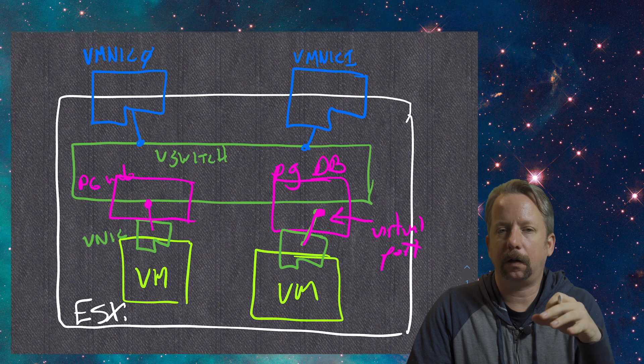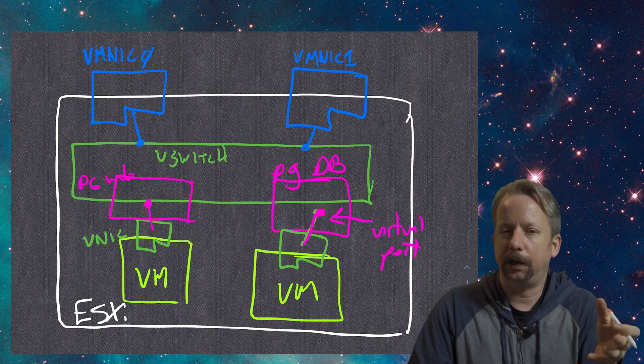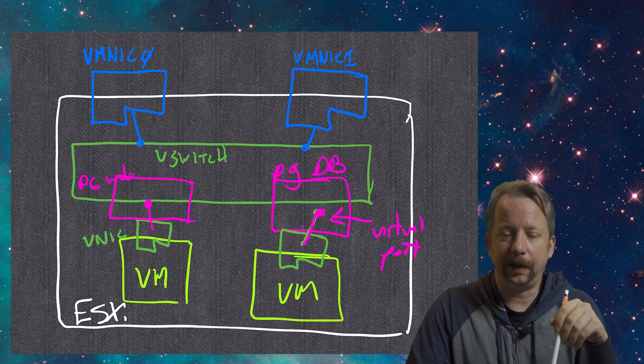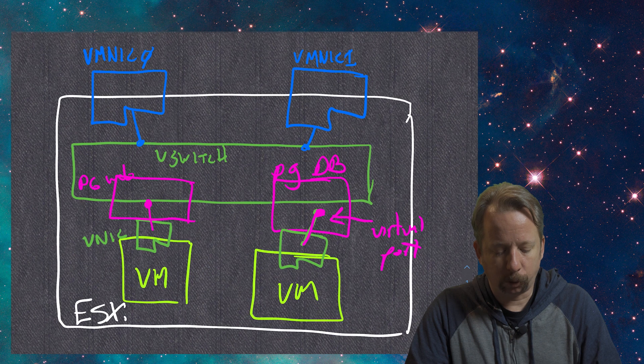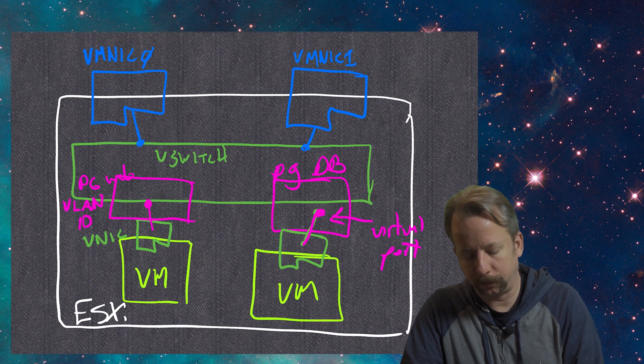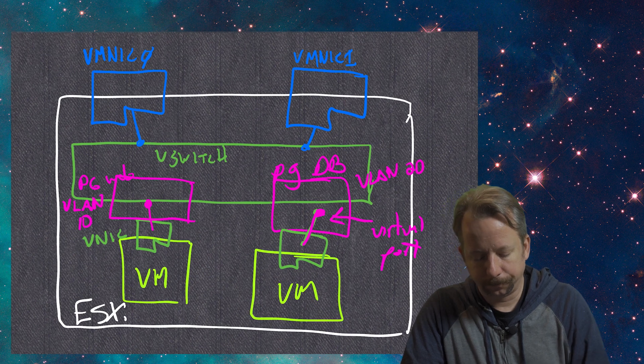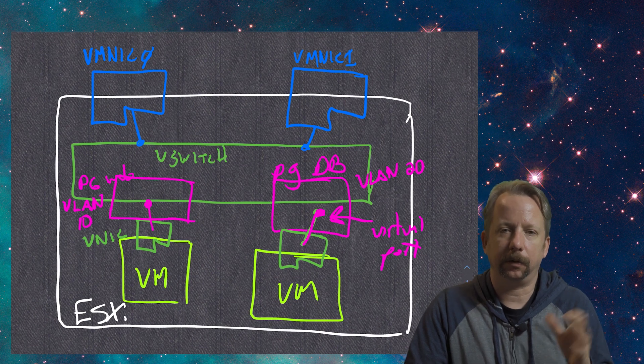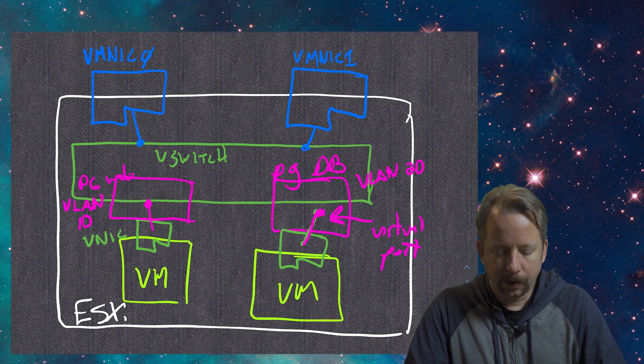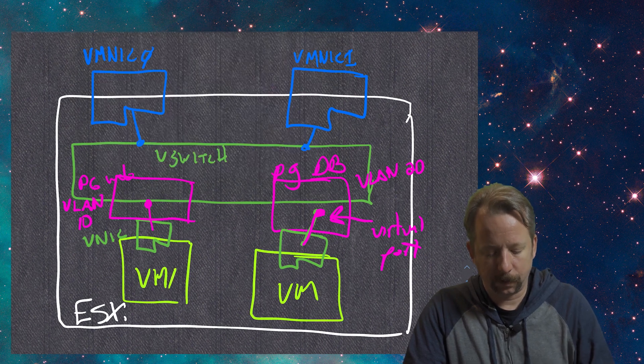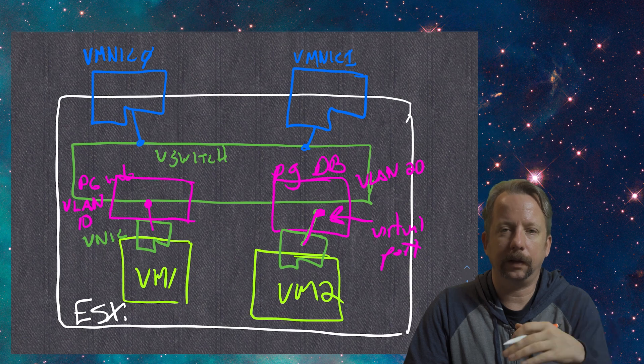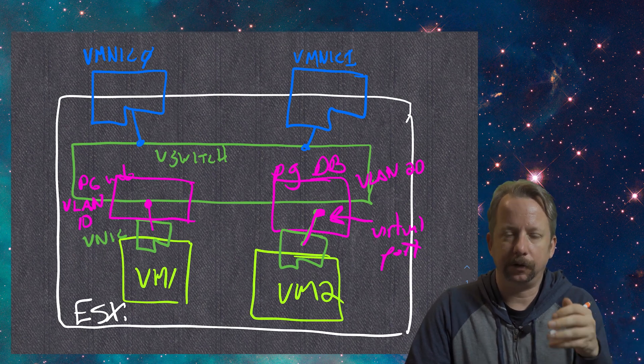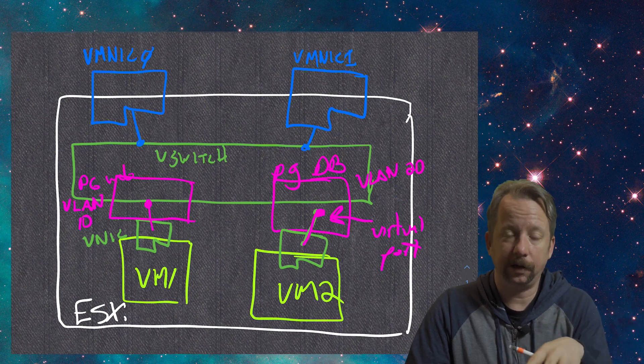The port groups themselves pretty much act like VLANs. In fact, in order to get the port group communication up into the switches that we plug into, we typically will tag a VLAN ID on the uplink. So each port group will get a VLAN ID - VLAN 10, this will be VLAN 20. By default, these two VMs cannot communicate with each other because they're on different port groups, just like two VMs couldn't communicate if they were on two different VLANs. Right now, they're isolated.